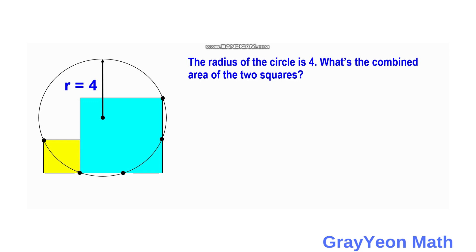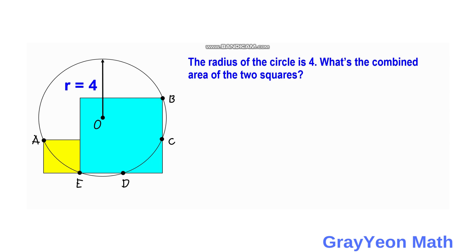The first thing we need to do is label the points. So we label this as A, this is O, then B, C, D, and E. Next, we draw a line that will serve as a chord from A to E.